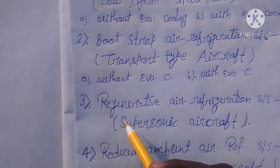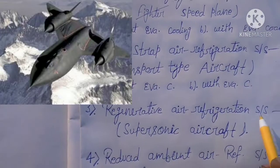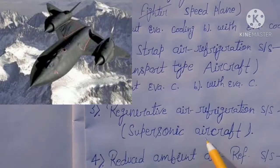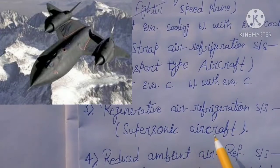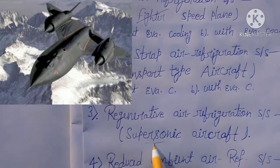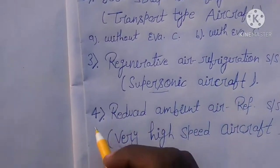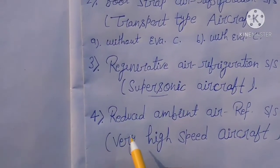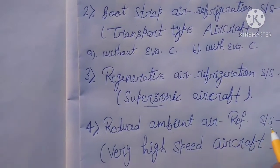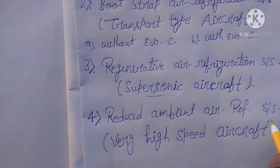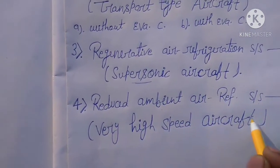Third is the regenerative air refrigeration system, which is used in supersonic aircraft. The fourth and last one is the reduced ambient air refrigeration system, which is used in very high speed aircraft.